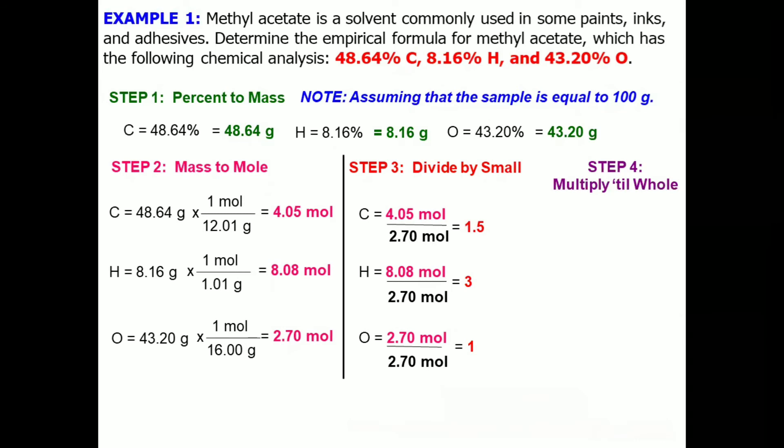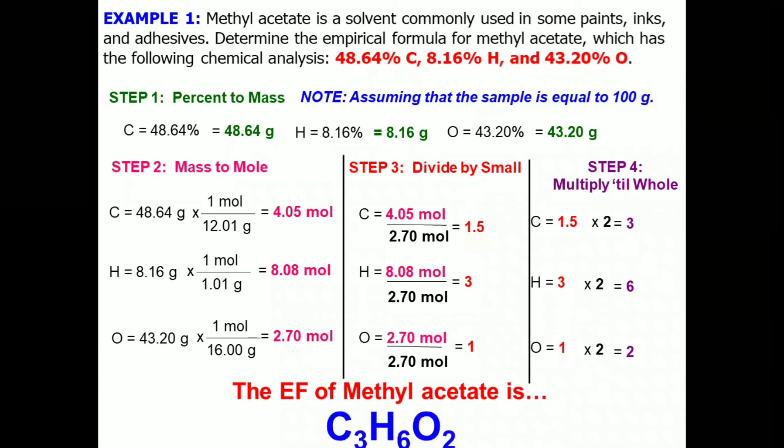Which is multiply till whole. So we have to think of a number that when we multiply 1.5, it will become a whole number. And the smallest number that we can use is 2. With this, we have to multiply as well the hydrogen and oxygen. The result for carbon is 3, for hydrogen 6, and for oxygen 2. With this, we can now determine the empirical formula of methyl acetate, and its empirical formula is C3H6O2.